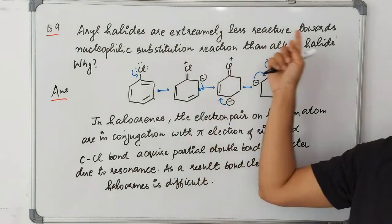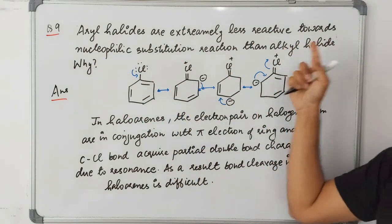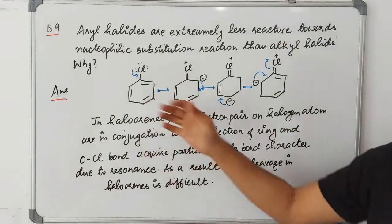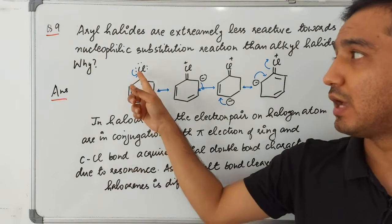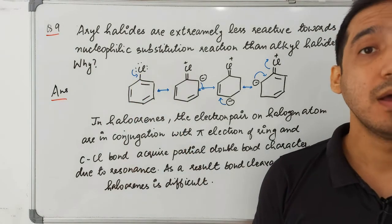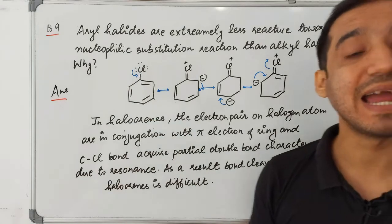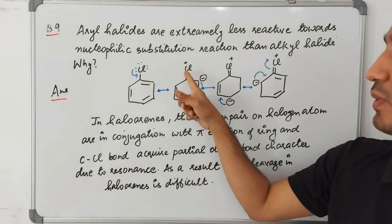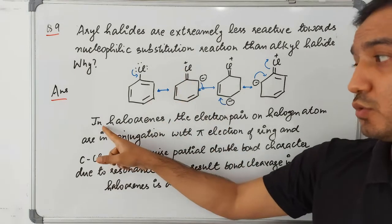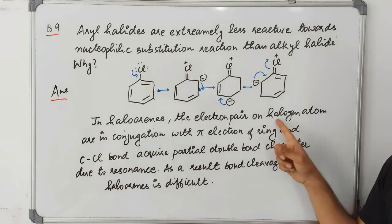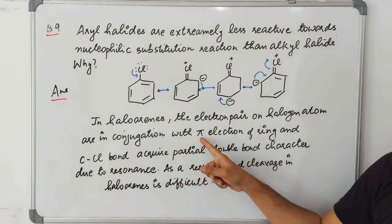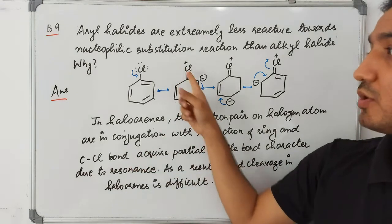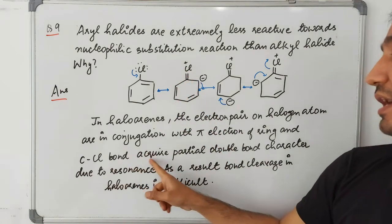Question nine: why are aryl halides extremely less reactive towards nucleophilic substitution than alkyl halides? In aryl halides, resonance shows that halogen exhibits a +R effect — electrons move into the benzene ring, creating a partial double bond between the halogen and the carbon. The electron pair on the halogen atom is in conjugation with the pi electrons of the ring.